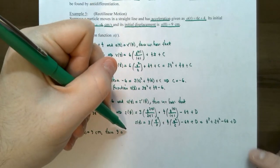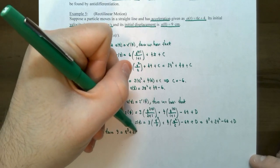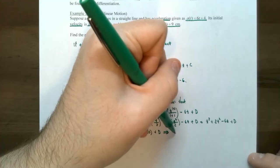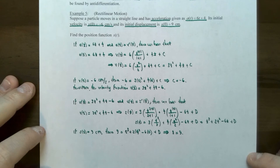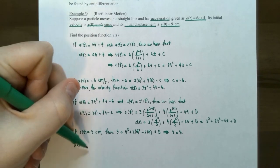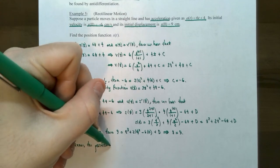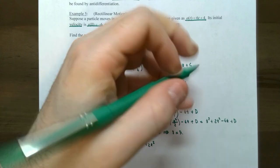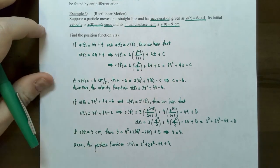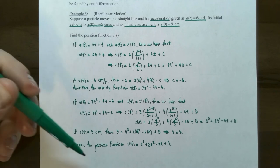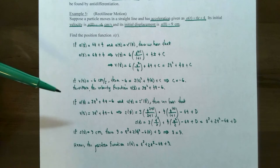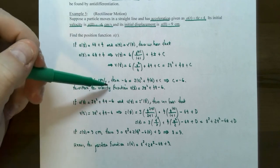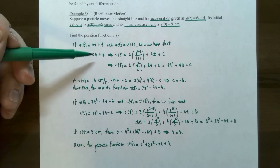Therefore, the position function is s(t) = t³ + 2t² − 6t + 9. This gives the position of the particle at any time t. This is called solving a second order differential equation because we started with the second derivative of position (acceleration), found the first derivative of position (velocity) via one anti-derivative, and then found another anti-derivative to get back to position.